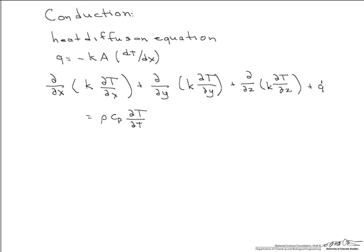So the heat diffusion equation shown right here needs to be simplified if we're going to analyze a plain wall that is steady state, has no heat generation, and the thermal conductivity k is constant.